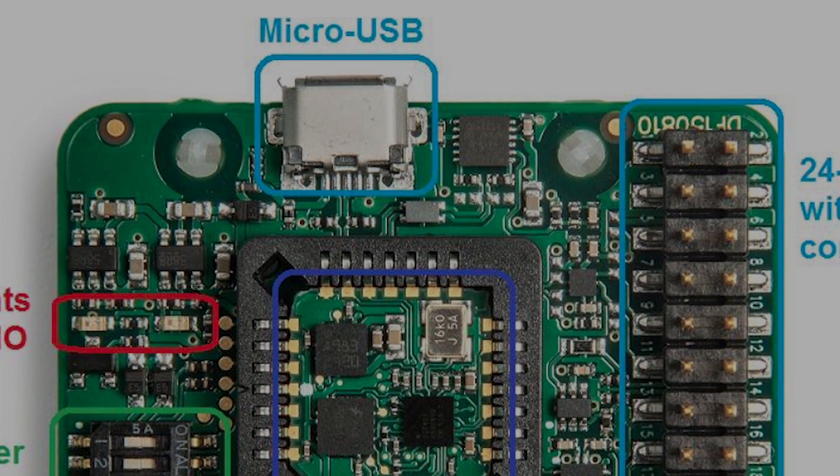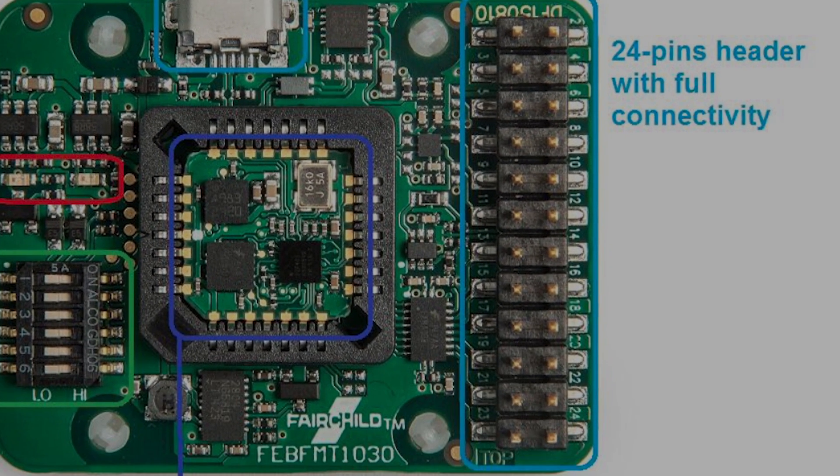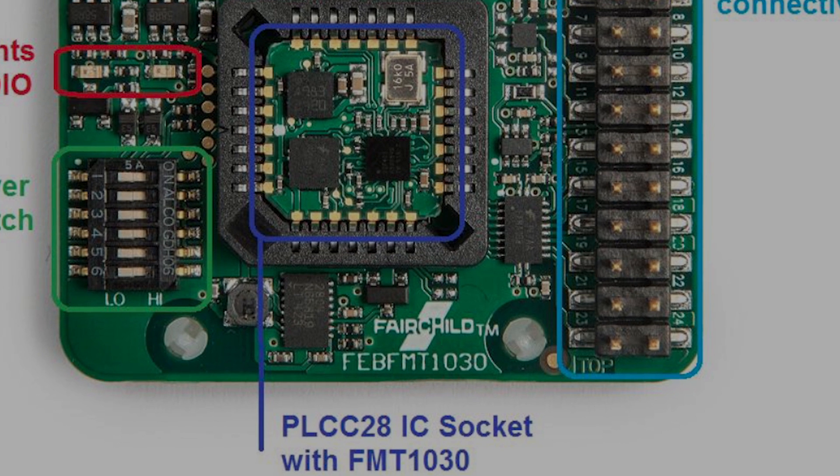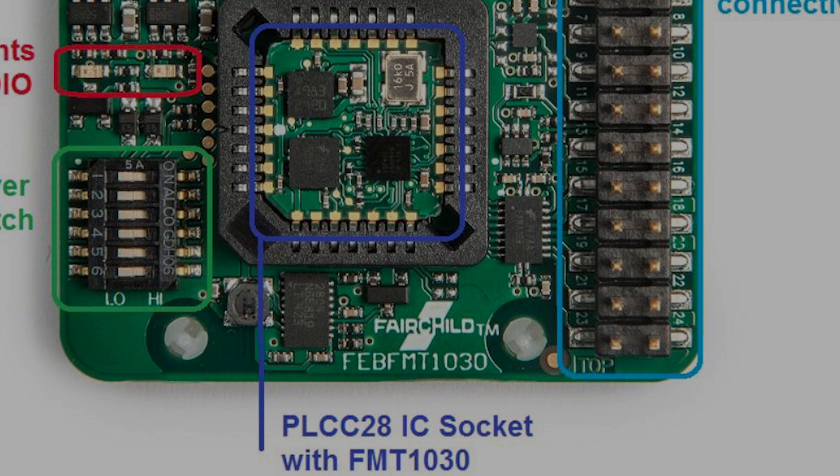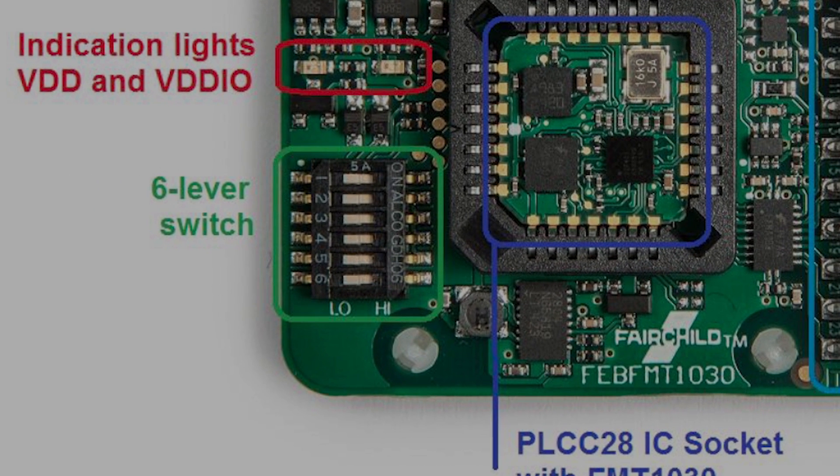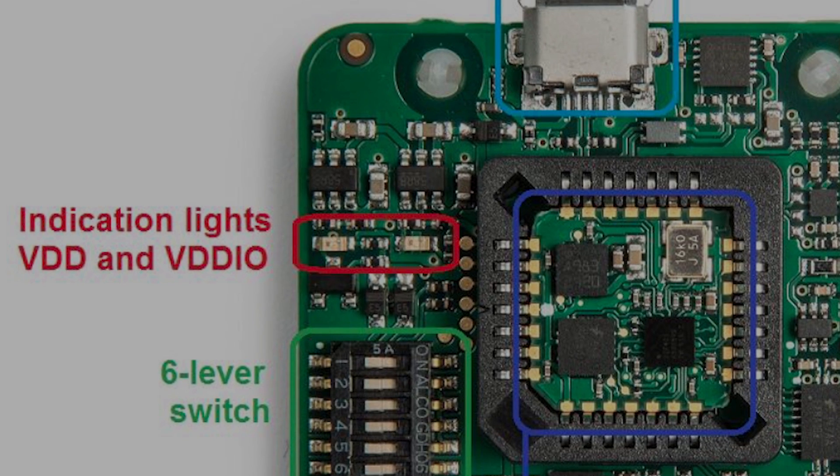Micro-USB, 24-pin header, plastic-leaded chip carrier socket with FMT-1000, a 6-level switch, indication lights. The FMT-1000 series consists of three distinct entities.